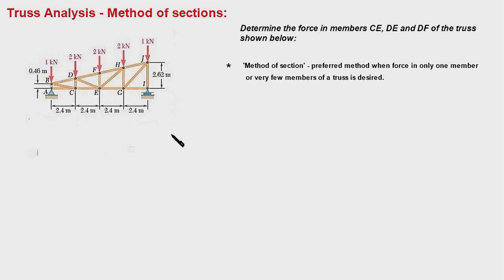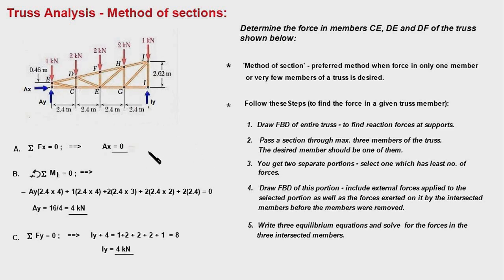Let's look into the steps involved in this method of sections. The first step is to draw FBD of the entire truss and here is the FBD of the truss. These two components of a force replace the pin support at point A and force IY in place of roller support, and the first task is to determine these three forces.